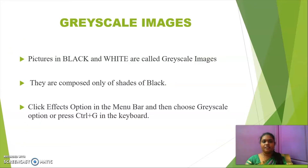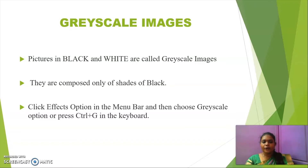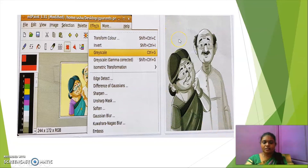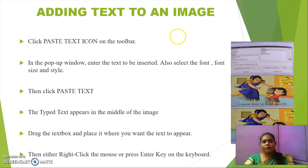Now we are going to see about grayscale images. Images which appear in color are called color images. If they are in black and white, we call them grayscale images. Grayscale images are composed of only shades of black color. To convert, click the Effects option in the menu bar, then choose the Grayscale option, or directly press Ctrl+G on the keyboard. Your image will get converted from color to shades of white and black — this is called a grayscale image.